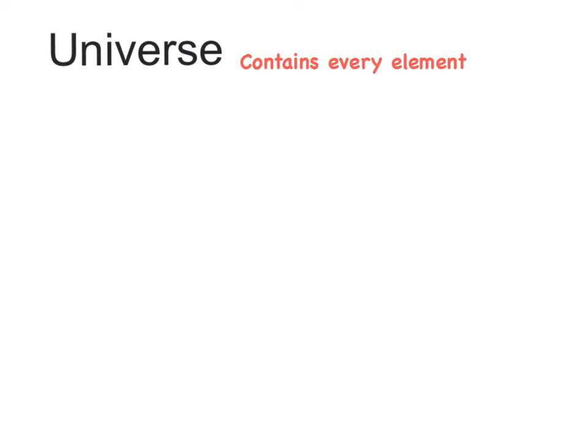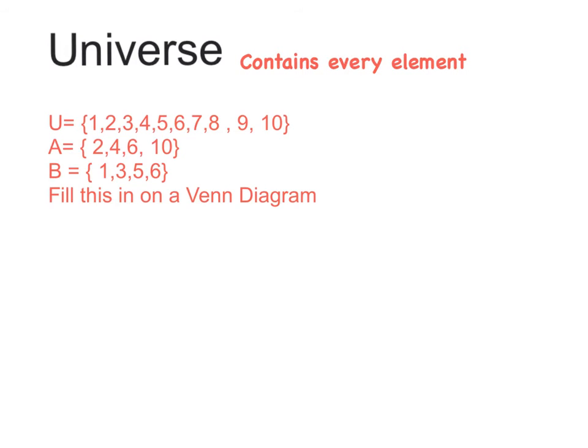And to sum it up, the universe contains every single element. So we look at a question here. So the question I'm given here is U is equal to {1, 2, 3, 4, 5, 6, 7, 8, 9, 10}. And the U is the symbol for universe.